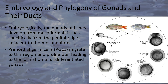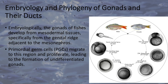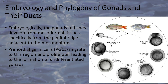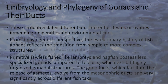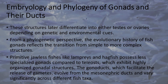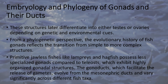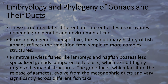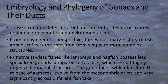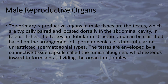Embryology and Phylogeny of Gonads and their Ducts. Embryologically, the gonads of fishes develop from mesodermal tissues, specifically from the genital ridge adjacent to the mesonephros. Primordial germ cells (PGCs) migrate to this region and proliferate, leading to the formation of undifferentiated gonads. These structures later differentiate into either testes or ovaries depending on genetic and environmental cues. From a phylogenetic perspective, the evolutionary history of fish gonads reflects the transition from simple to more complex structures. Primitive jawless fishes like lampreys and hagfish possess less specialized gonads compared to teleosts, which exhibit highly organized gonadal structures. The gonaducts, which facilitate the release of gametes, evolve from the mesonephric ducts and vary significantly across different fish taxa.